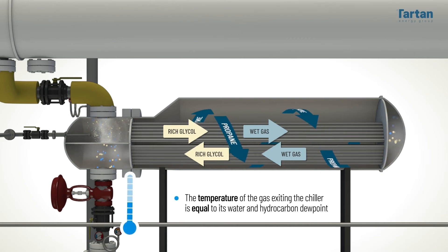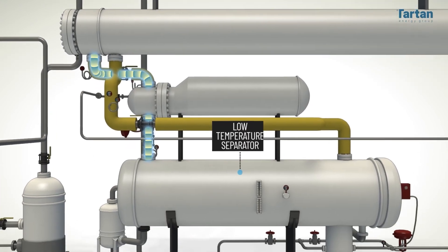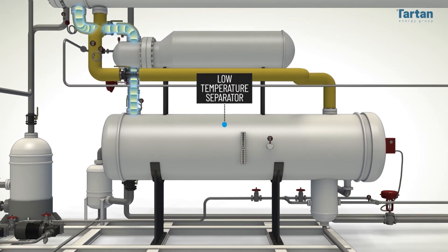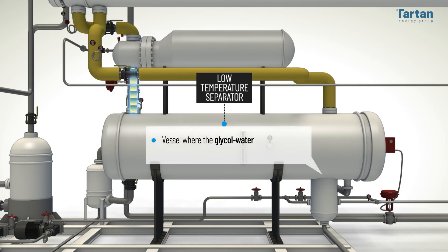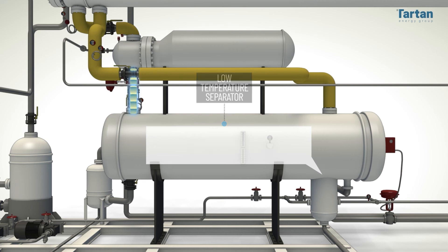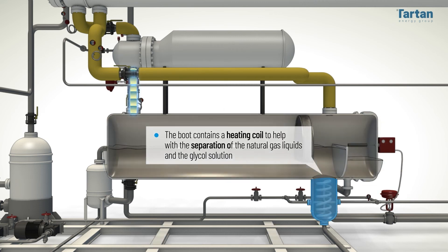Theoretically, the temperature of the gas exiting the chiller is equal to its water and hydrocarbon dew point. Downstream from the propane chiller is the low temperature separator, or LTS — the vessel where the glycol water phase is separated from the hydrocarbon phase. There is a boot below the LTS, which typically contains a heating coil to help with the separation of the natural gas liquids and the glycol solution.